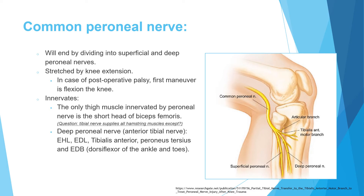If you get a scenario of a patient postoperatively after total knee replacement with weak dorsiflexion, the first thing to do is flex the knee, because flexion relaxes the common peroneal nerve. The common peroneal nerve traverses along the neck of the fibula and then gives two branches: the superficial peroneal and the deep peroneal — that is why it is called the common peroneal, because it gives both.